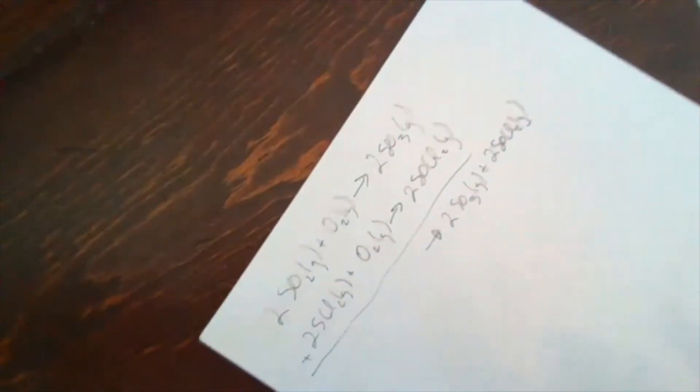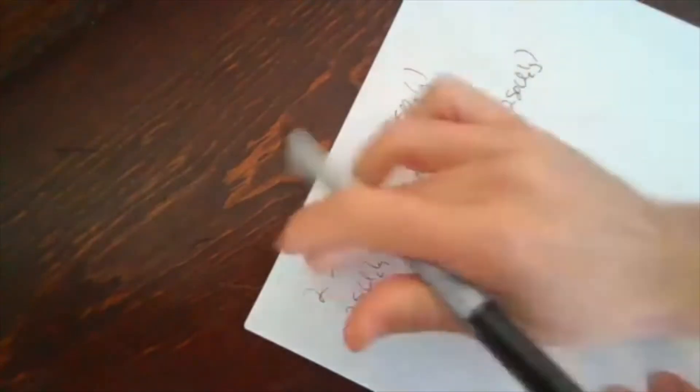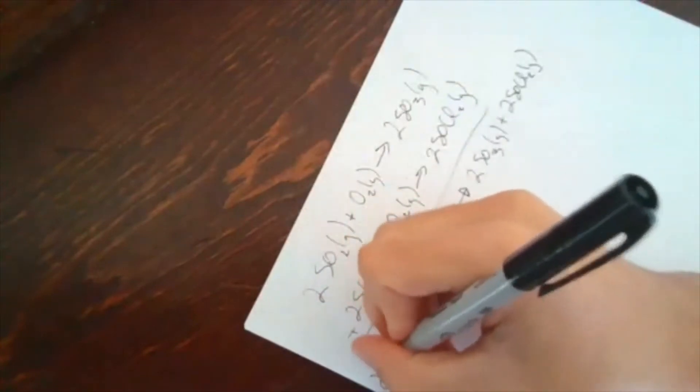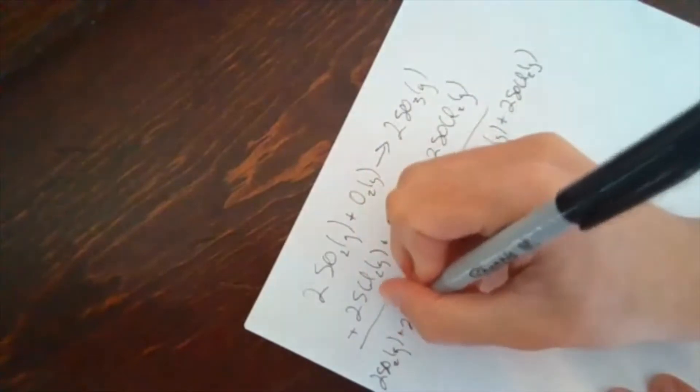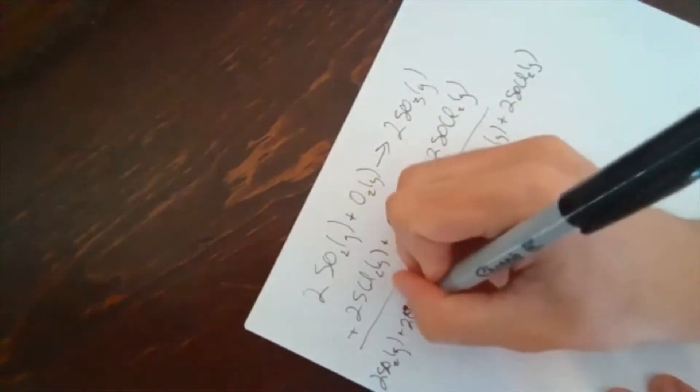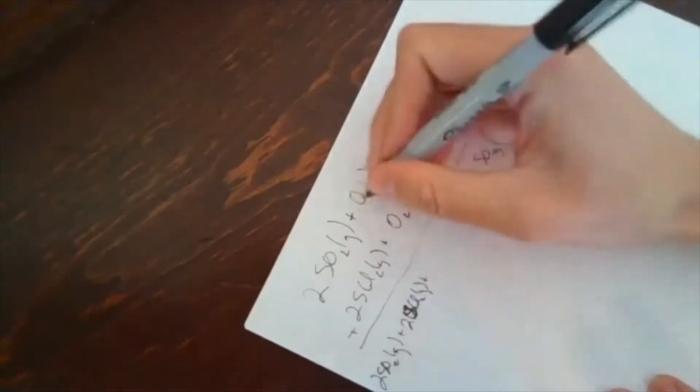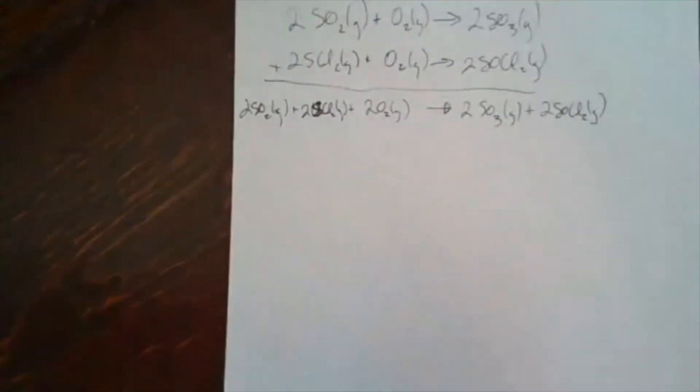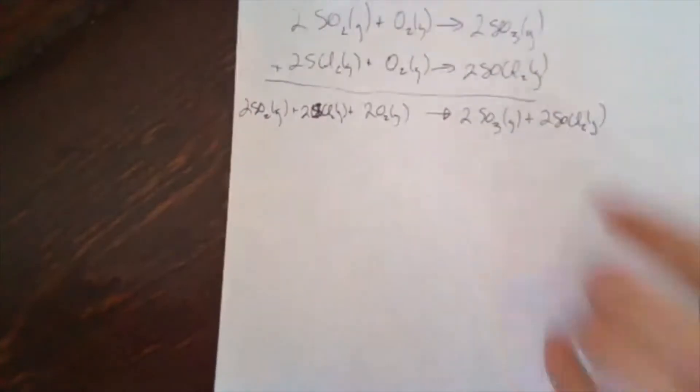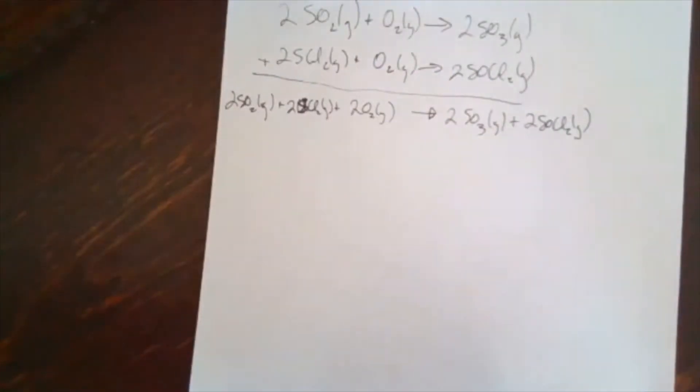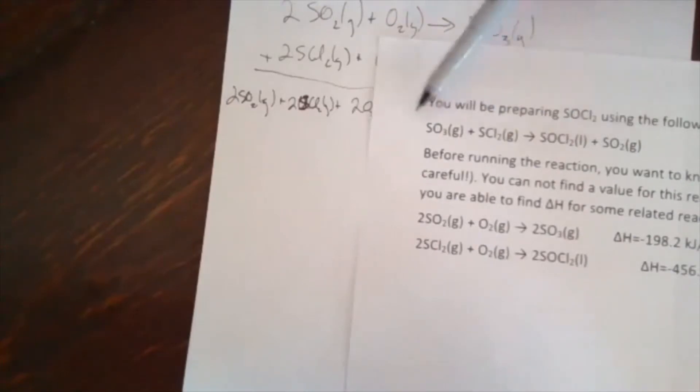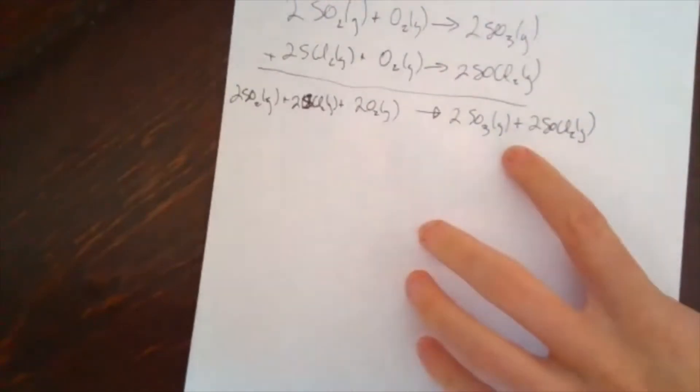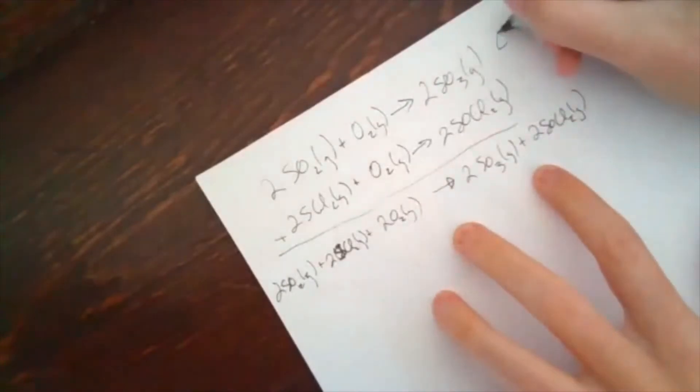2SOCl2 gas. So I'll just move all those. I got the 2SO2 gas plus 2SCl2 gas plus I'm going to combine those 2O2 gas. Wonderful. So if I add those two reactions together, this is what I get. I don't care though, because this is what we want. This is the reaction we actually want. This reaction, you can figure out its delta H.